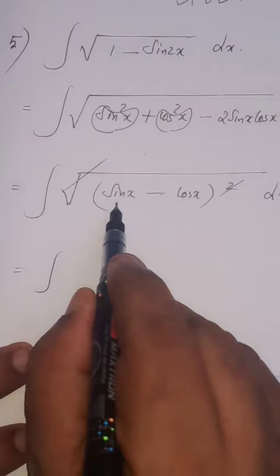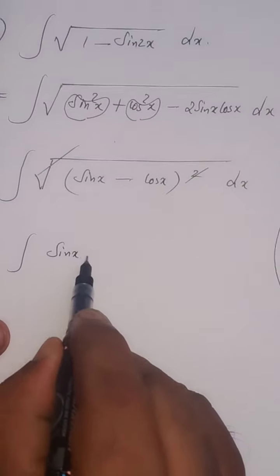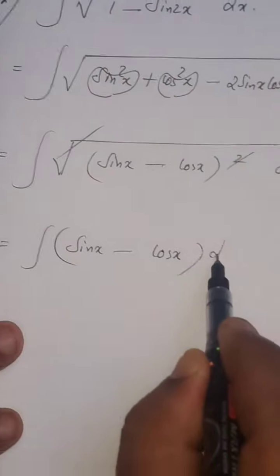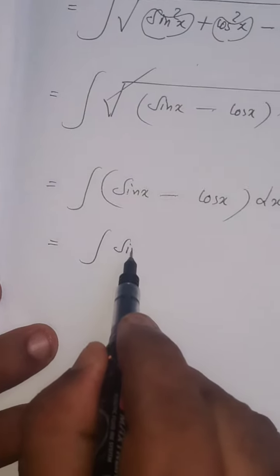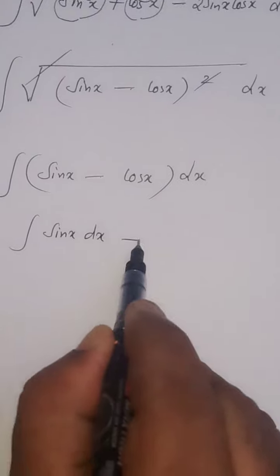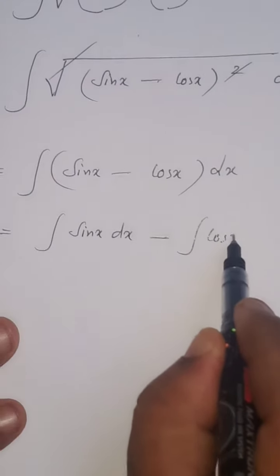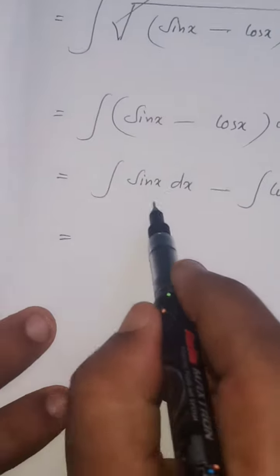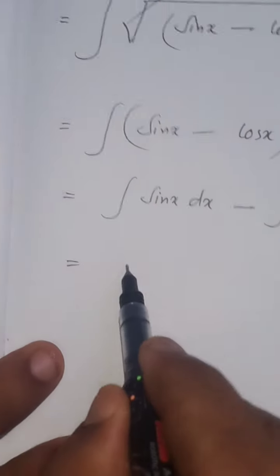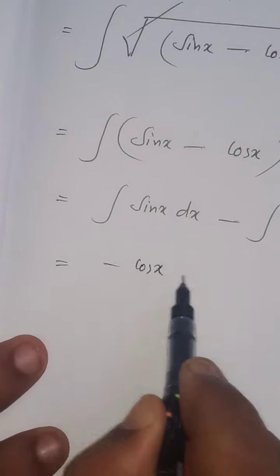So which one is left out? Sin x minus cos x dx. It can be separated as integral sin x dx minus integral cos x dx. Now very simple, direct formula only.